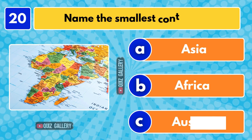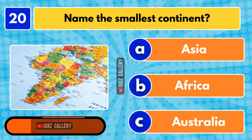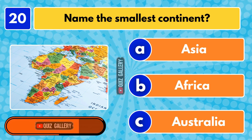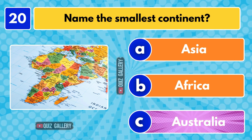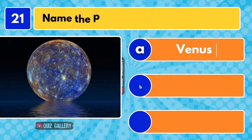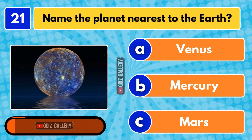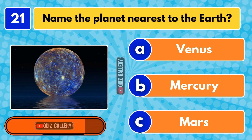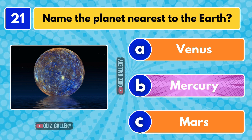Name the smallest continent. Australia is the smallest continent. Name the planet nearest to the Earth. Mercury.